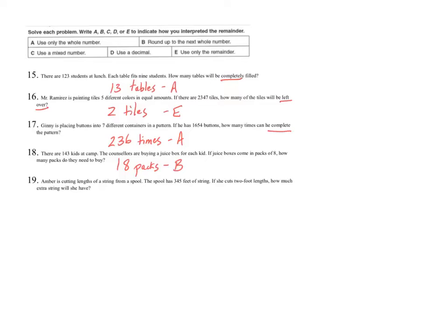Question 19 says Amber is cutting lengths of string from a spool. The spool has 345 feet of string. If she cuts two-foot lengths, how much extra string will she have? The keyword is 'extra string' — all we care about is the remainder. This is a problem where we don't even really need to do the division. Because if I take any odd number and divide it by two, the remainder is always going to be one. For example: 5÷2=2 remainder 1; 7÷2=3 remainder 1; 11÷2=5 remainder 1. So the extra string will be 1 foot — Strategy E.